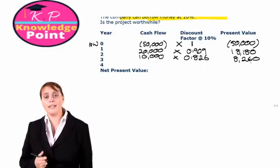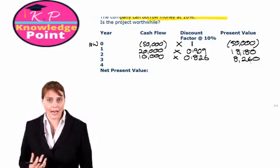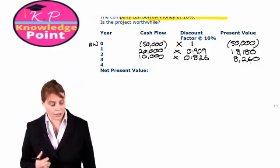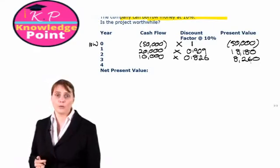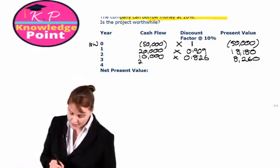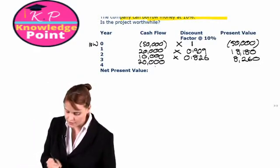Very same again for year 3. What is our cash flow? Check your timeline. In three years' time we're going to receive $20,000.